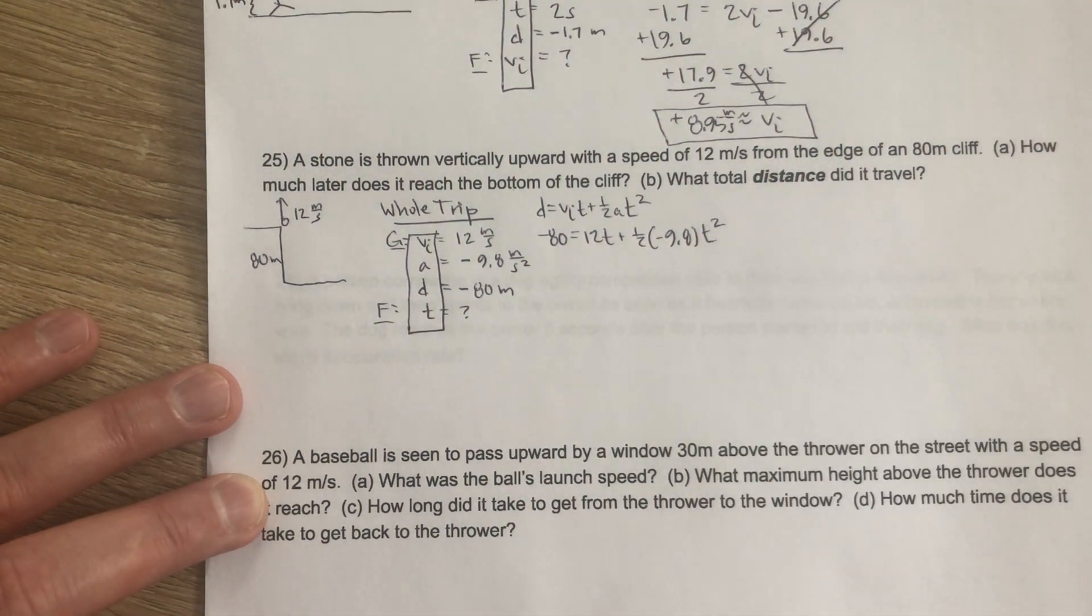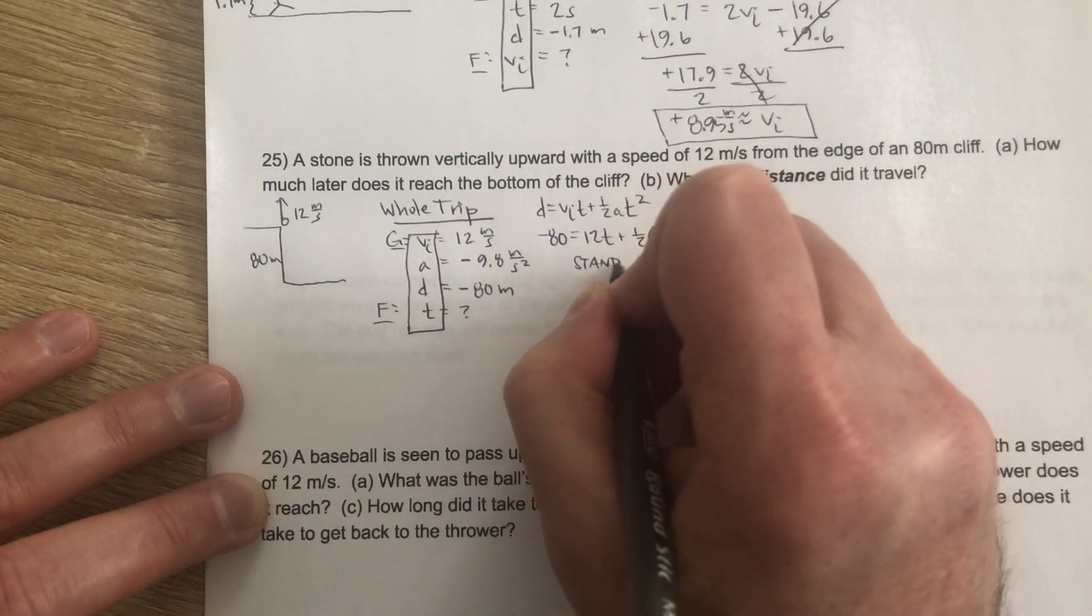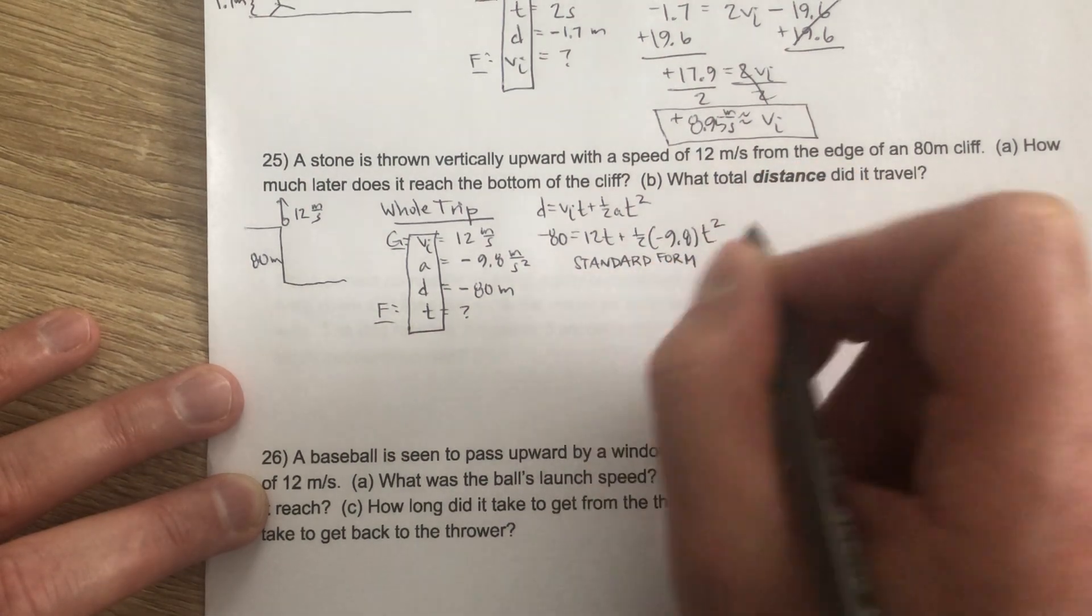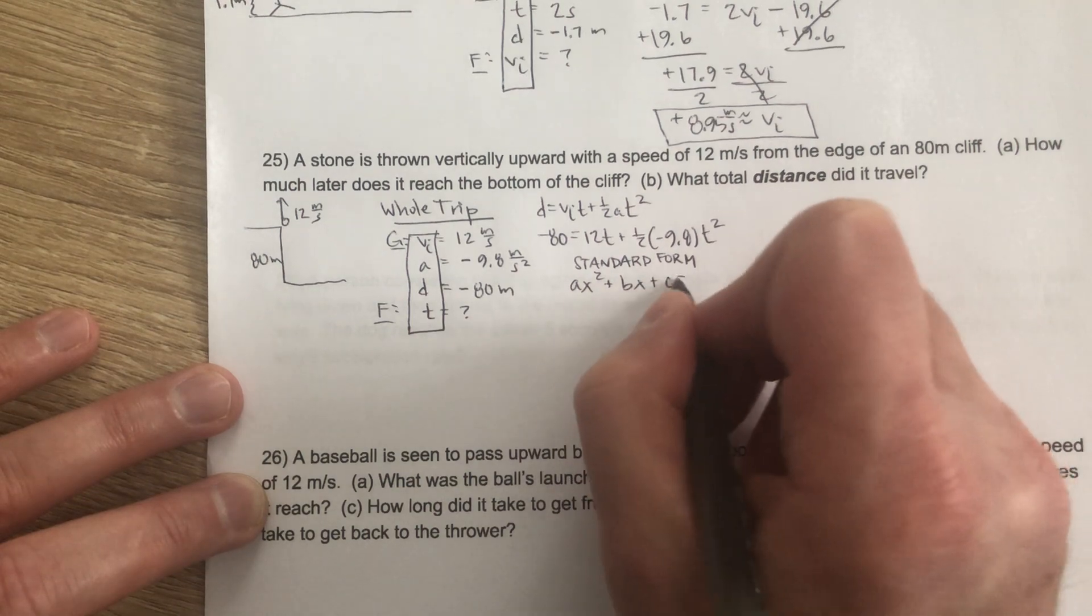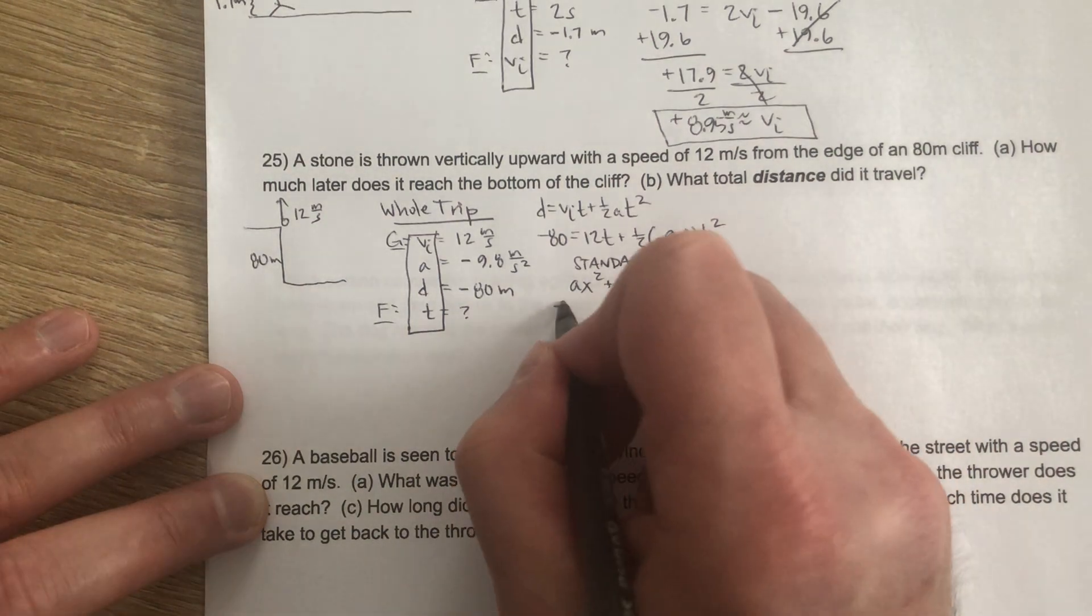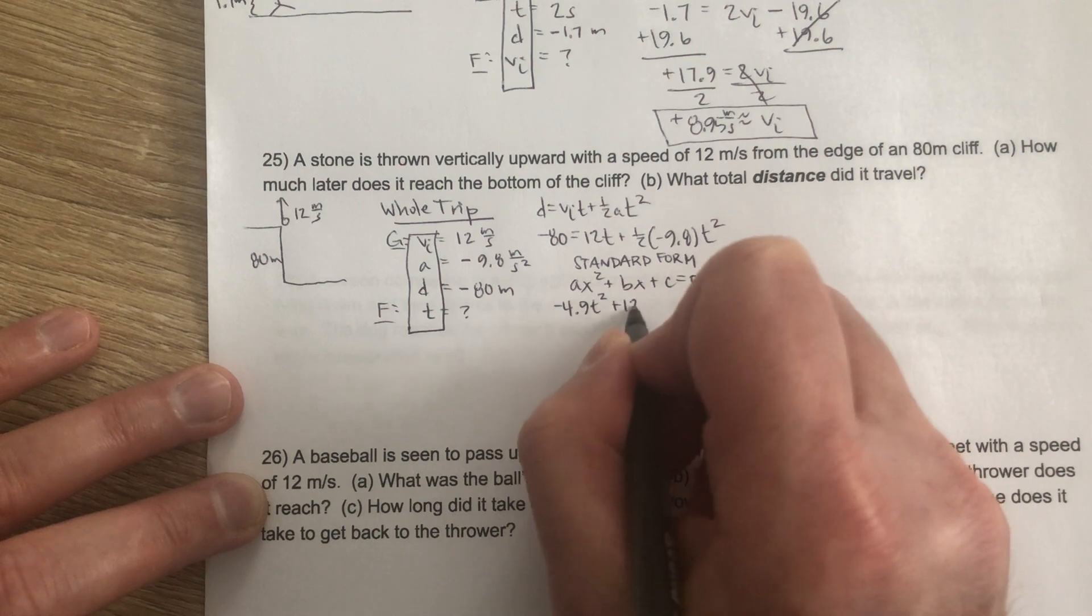So this is the scenario we've looked at before, that we're going to want to put this in standard form of AX squared plus BX plus C equals 0. So for us, 1 half times negative 9.8 is negative 4.9. So negative 4.9 T squared plus 12T.